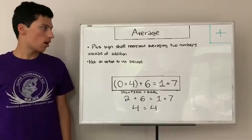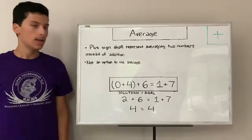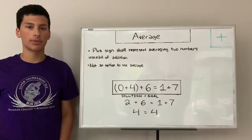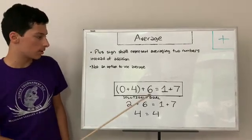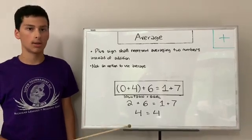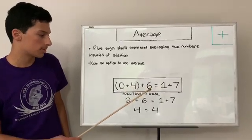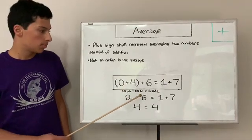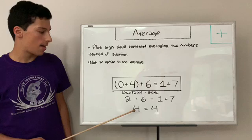Average makes all plus signs represent averaging two numbers instead of just addition. It's not an option to use average. All addition signs are now average. You can't choose if you want to or if you don't want to. If you look at this example here, as you can see, you don't have to indicate that you used average because it's used in all addition signs. The solution is 0 plus 4 plus 6 equals 1 plus 7. 0 plus 4 averages out to be 2 plus 6, which is 8 divided by 2 because you average, averages out to be 4.